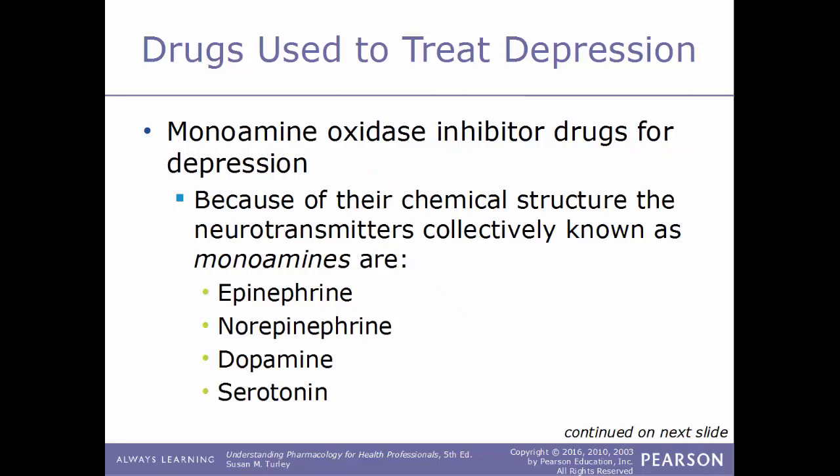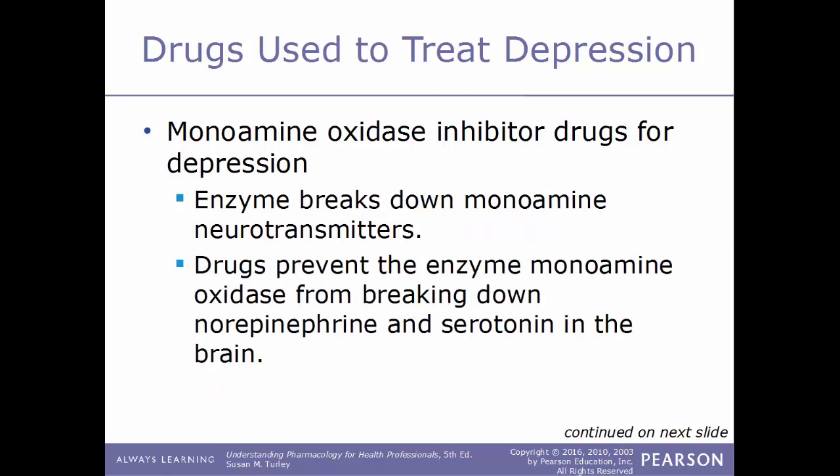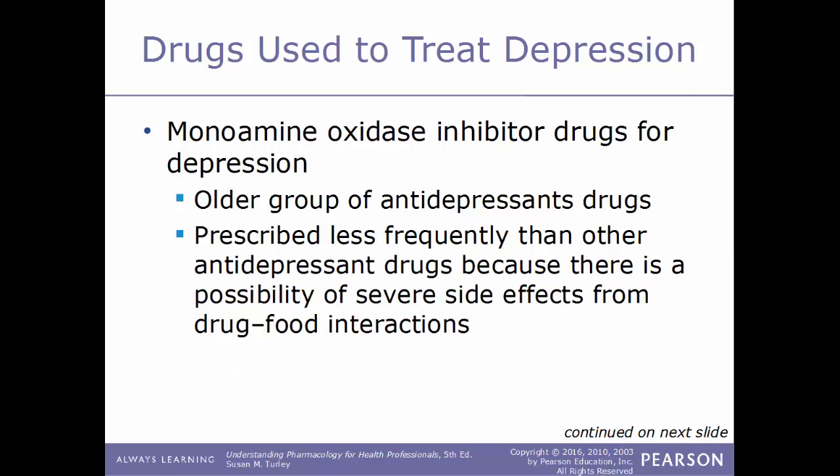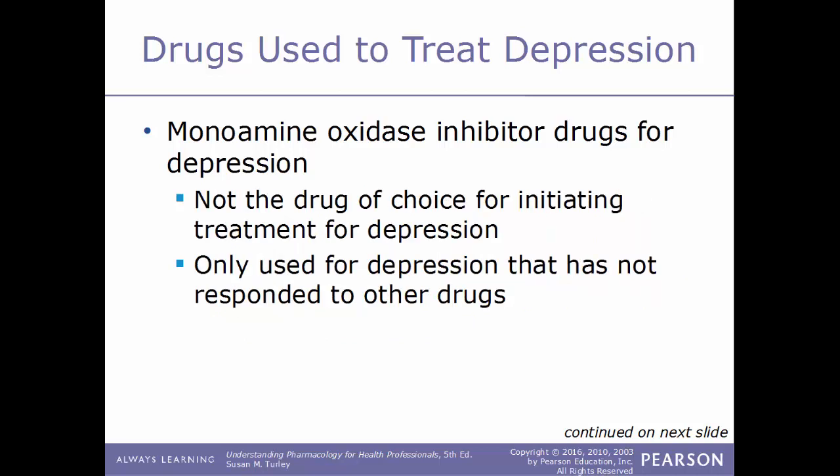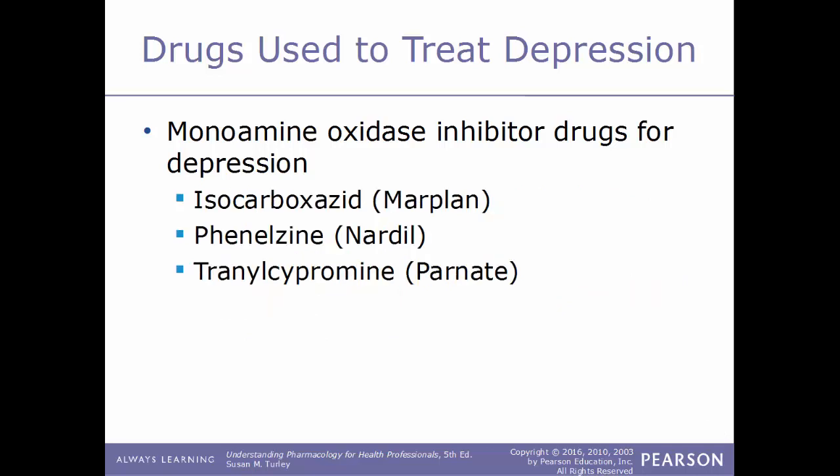MAOs — monoamine oxidase inhibitors — target the enzyme monoamine oxidase, which breaks down neurotransmitters collectively known as monoamines: epinephrine, norepinephrine, dopamine, and serotonin. MAO inhibitors prevent the enzyme from breaking down norepinephrine and serotonin in the brain. This is an older group of antidepressants, prescribed less frequently because of the possibility of severe drug-food interactions. They are only used for depression that has not responded well to other drugs.